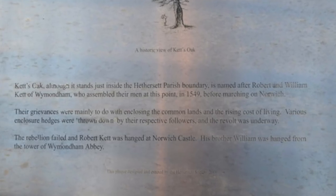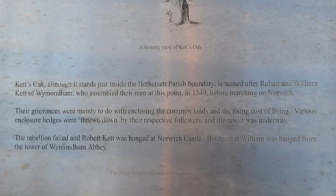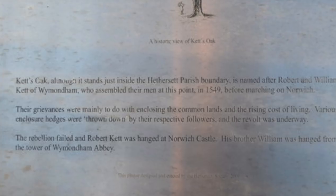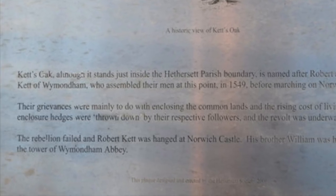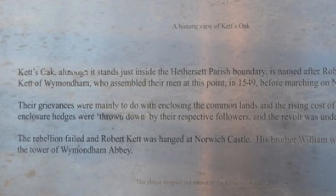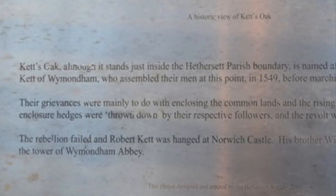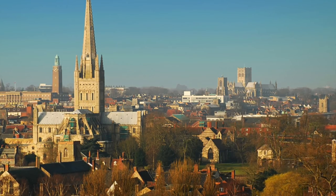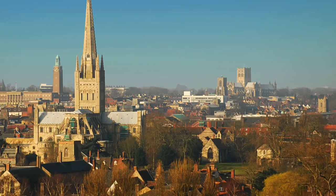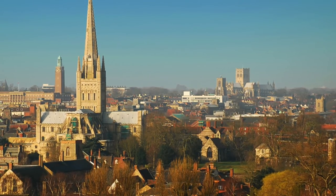Ket's Rebellion followed a similar pattern to the Western Rebellion in that the rebels didn't march towards London but instead set up camp near Norwich. There they ran a largely peaceful campaign to end enclosure, improve local government and secure better clergymen. On the 21st of July the rebels started firing on Norwich, and a day later they had control of the city.